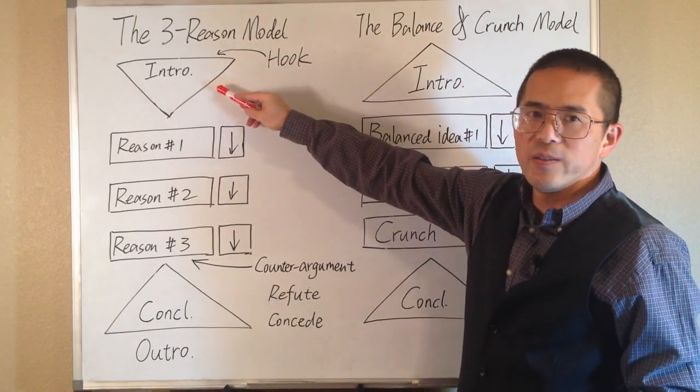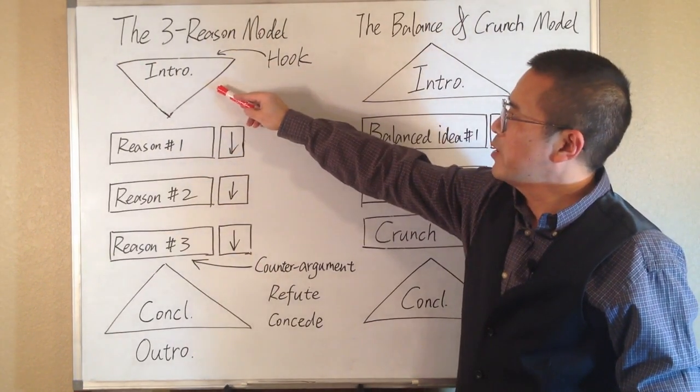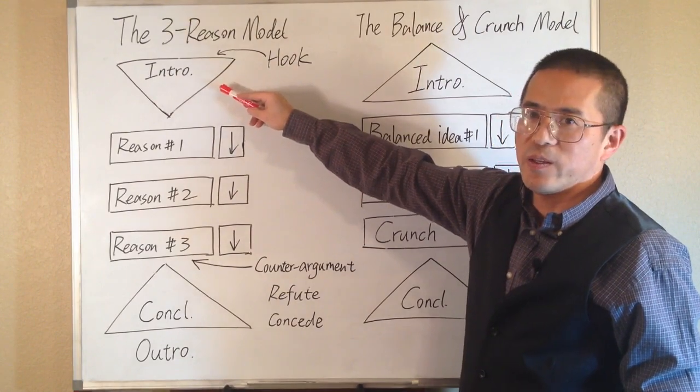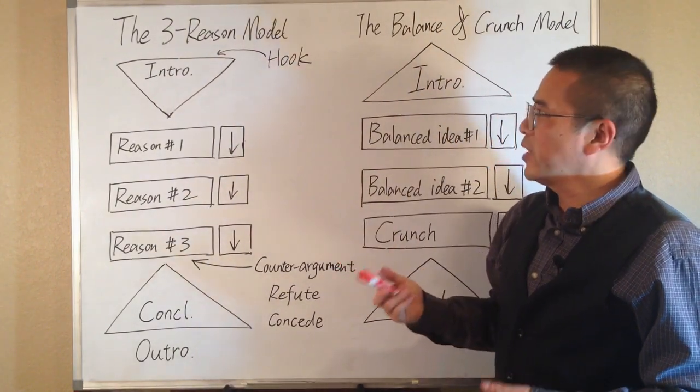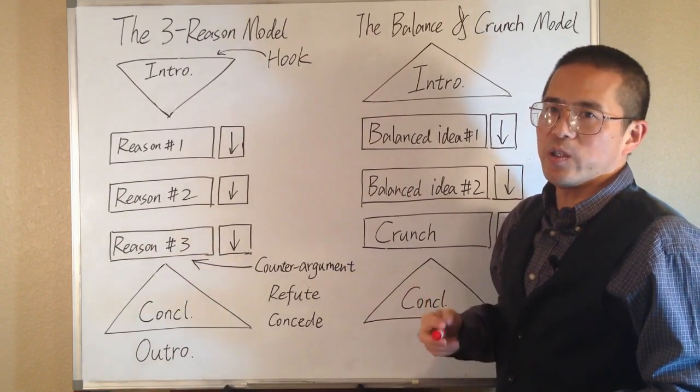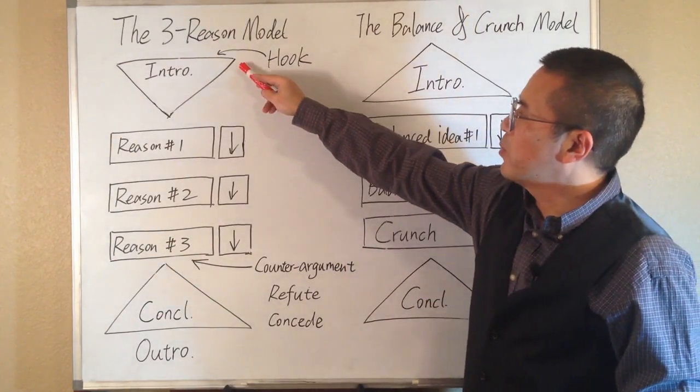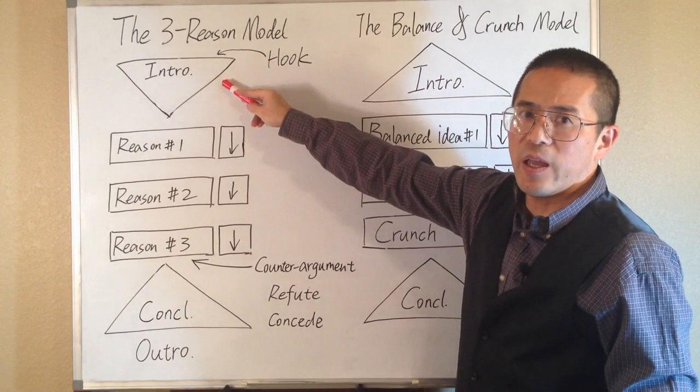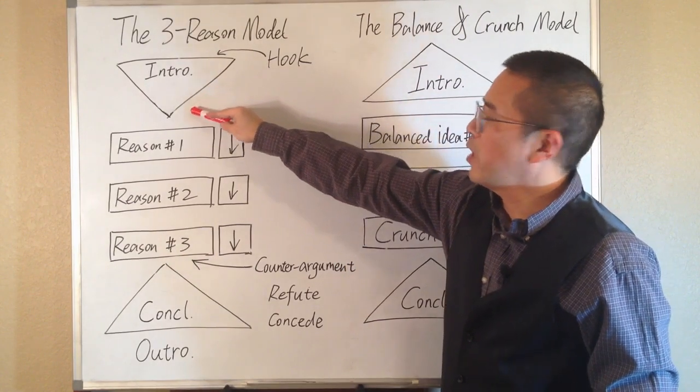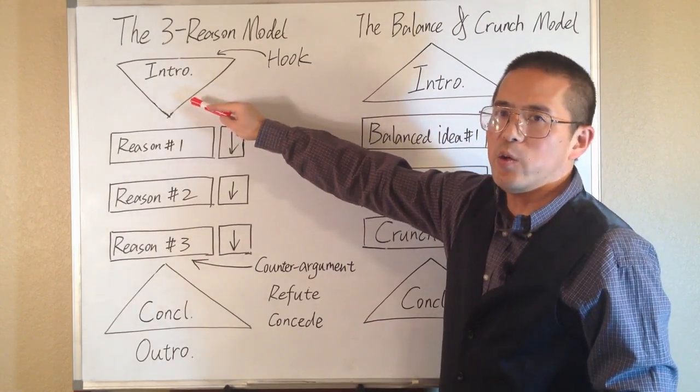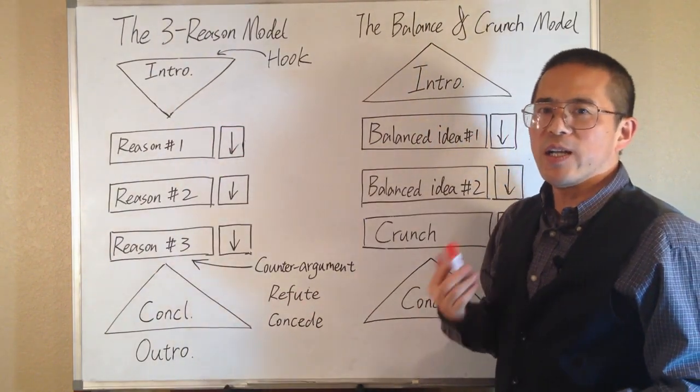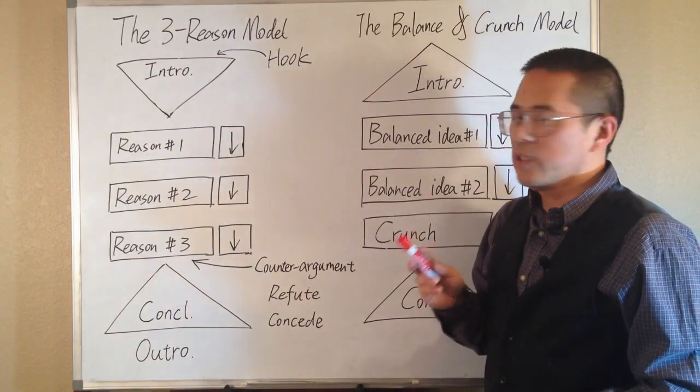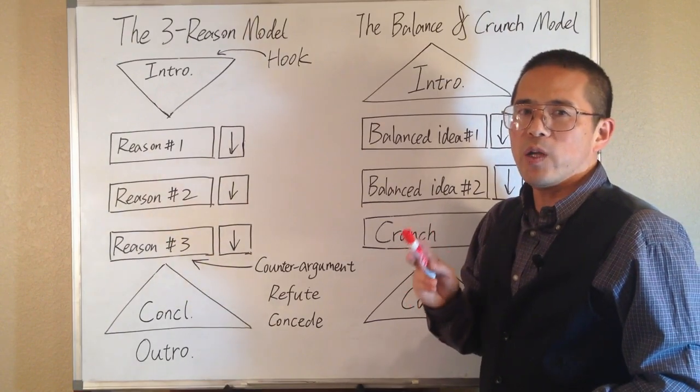Start from the top. This inverted triangle is our introduction. First we want to provide some background information, so that the reader can understand why our topic is important. We want to start from a broader idea and narrow it down until the end of the introduction. And here we have our thesis statement. The thesis statement is where we clearly state our opinion on the topic in one well-written sentence.